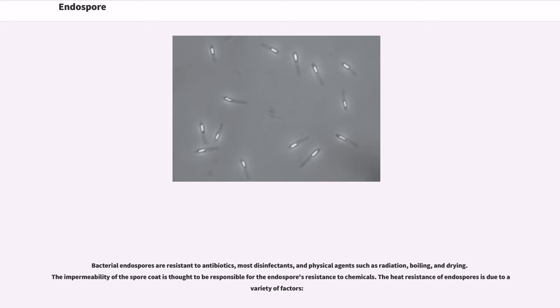Bacterial endospores are resistant to antibiotics, most disinfectants, and physical agents such as radiation, boiling, and drying. The impermeability of the spore coat is thought to be responsible for the endospore's resistance to chemicals. The heat resistance of endospores is due to a variety of factors.